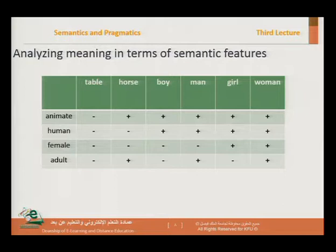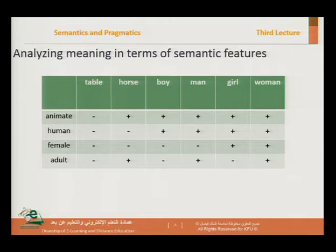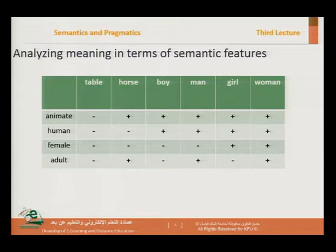How about boy? Boy is definitely animate — plus animate. It's a human being — plus human. It's minus female because it's male, but also minus adult because a boy is non-adult; he's young. If we compare boy and man, they are identical in everything except adulthood — a man is plus adult and a boy is minus adult. When we bring a girl along, it is plus animate, plus human, plus female, minus adult.